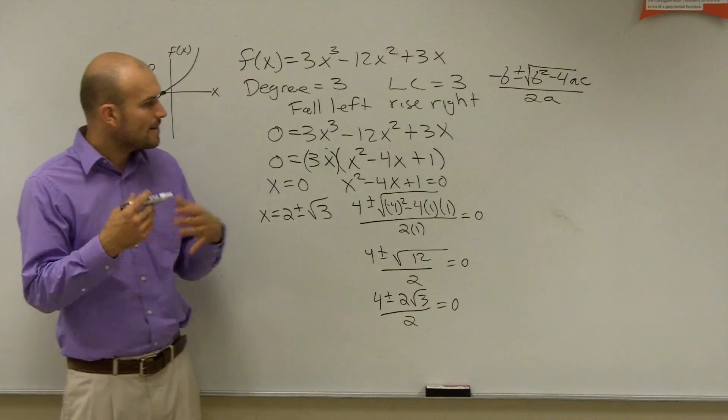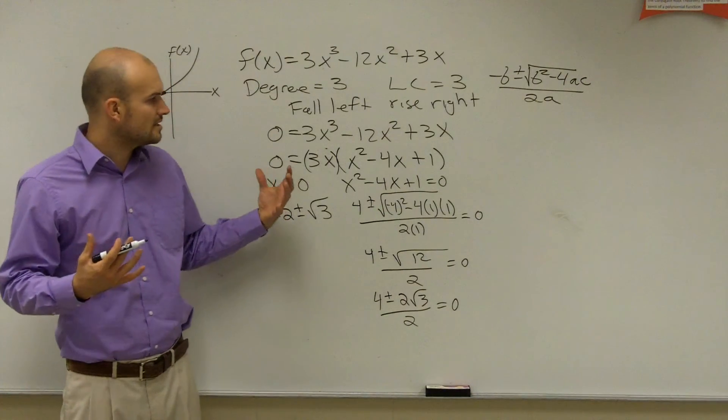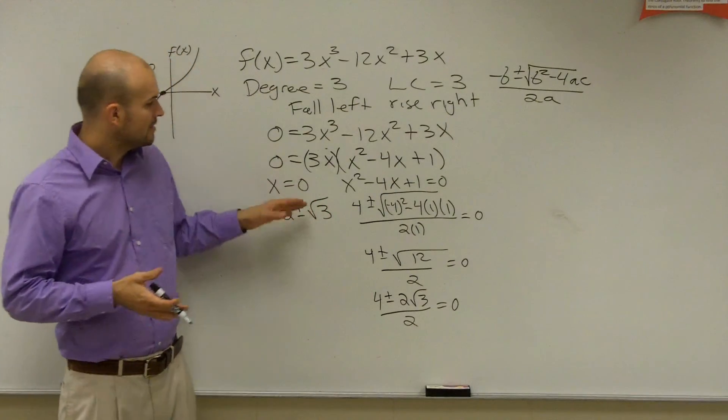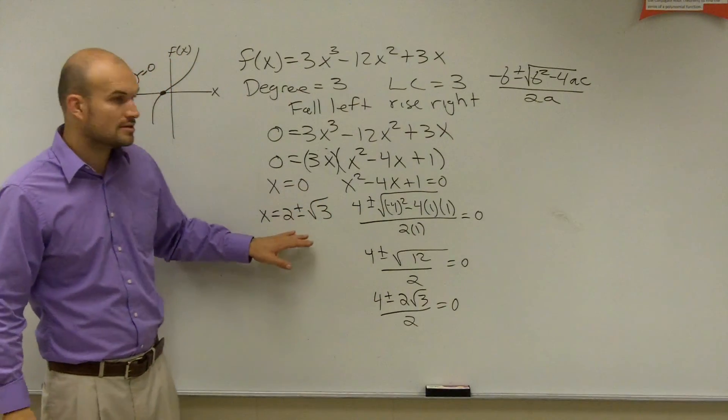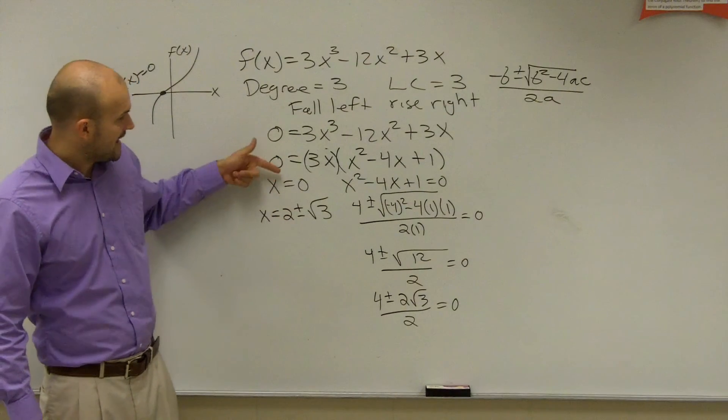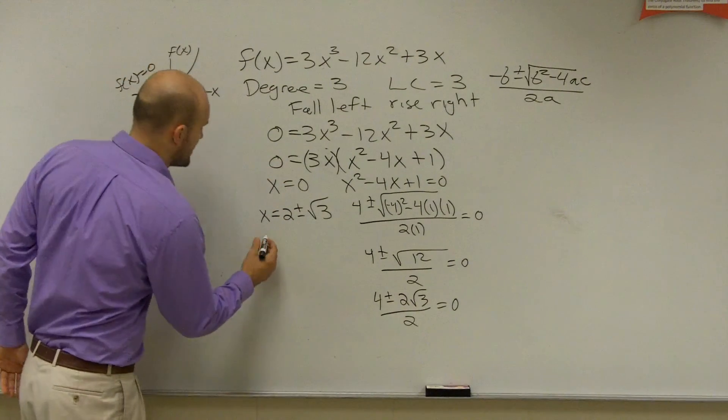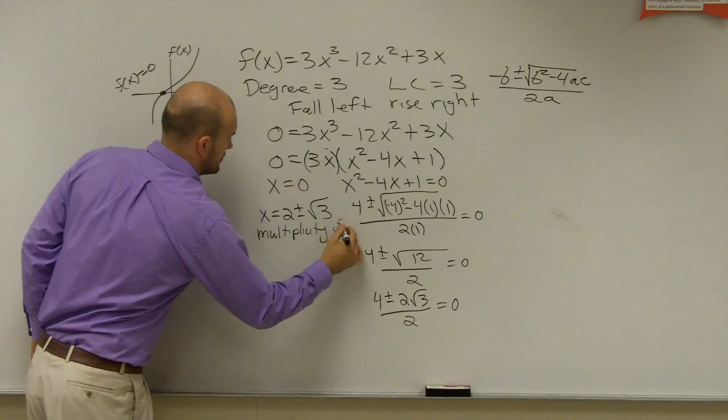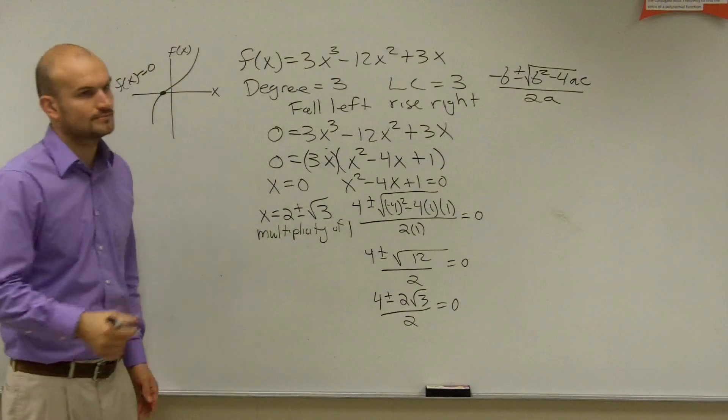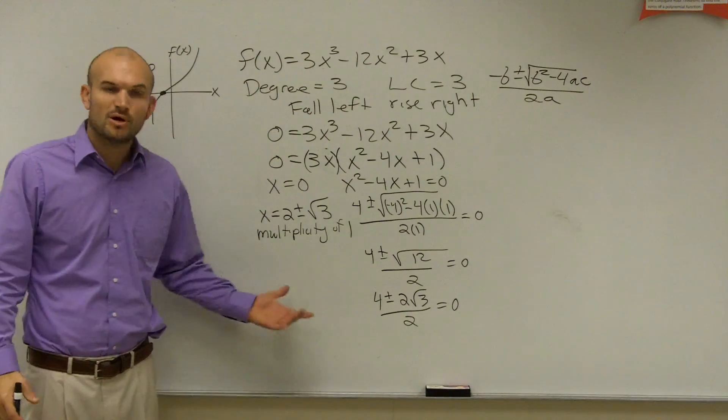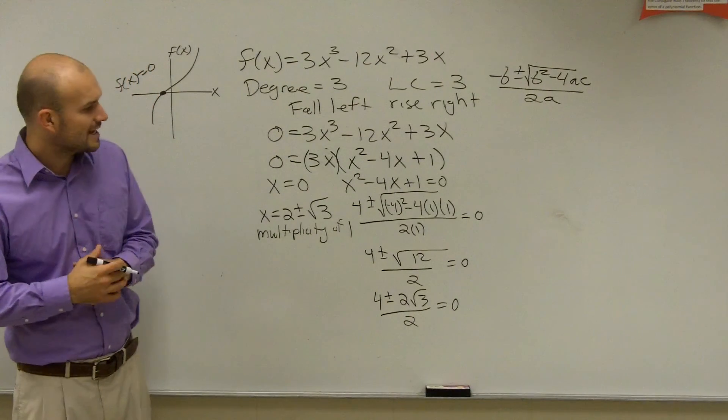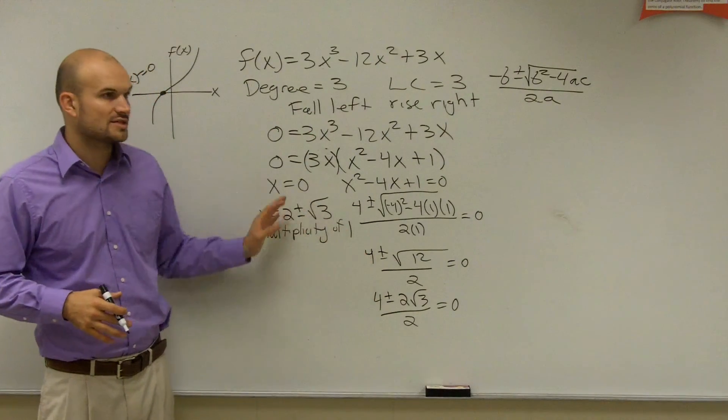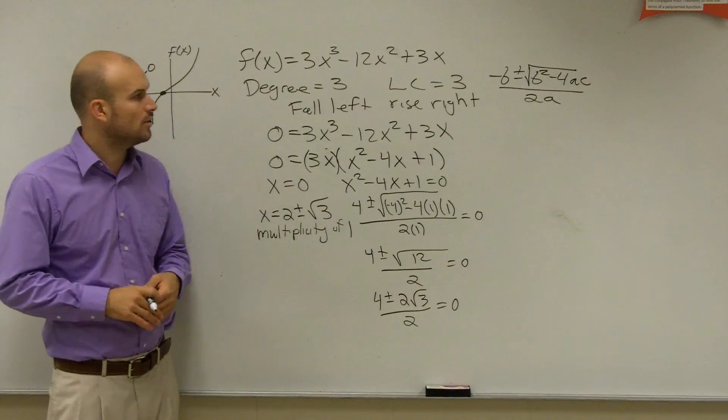Now, to determine the multiplicity, remember our multiplicity is going to tell us if my graph is going to touch it or going to go straight through. Since both of these factors are unique, and this factor is also unique, I'm all going to have a multiplicity of 1. So, that's how we're doing the multiplicity for this one. It's not the best one I want to do to describe multiplicity for some of you, but you can see that each one of these zeros is unique, so we're going to have a multiplicity of 1.